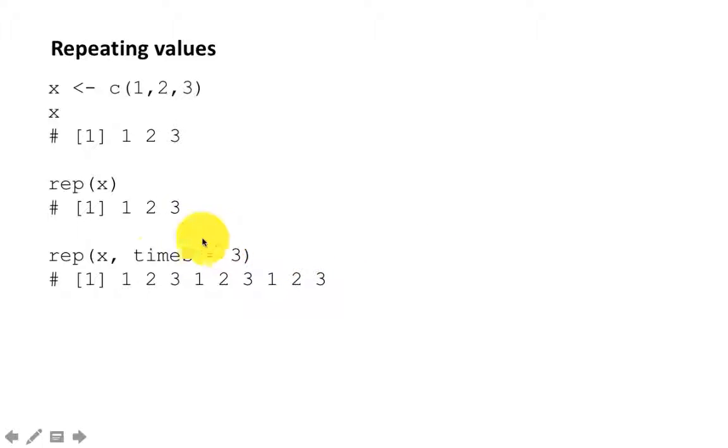When you're replicating the elements, you may want the entire vector to get replicated in its sequence, or you may want each element to be replicated that many times. Then you can use each=, in which case you will get 1, 1, 1, 2, 2, 2, 3, 3, 3.